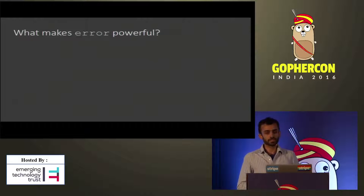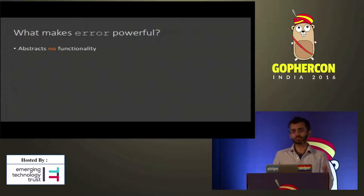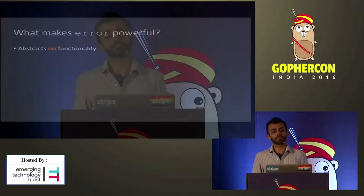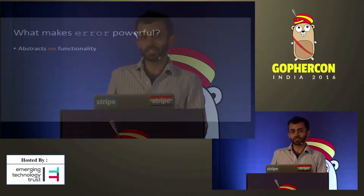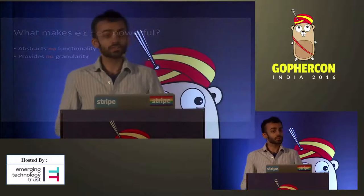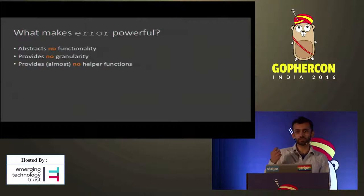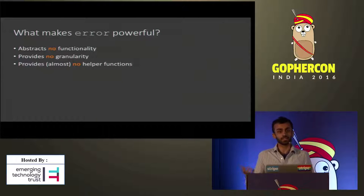Error, on the other hand, is interesting because it's powerful for almost the exact opposite reasons. Unlike the IO interfaces, it abstracts no functionality whatsoever. The only thing the error interface does is tell you: I am an error and here is the string that corresponds to it. In most cases, that string is statically determined — not even dynamically computed from runtime data. There's no granularity, only one method and one interface, no related interfaces, and almost no helper functions. You get errors.New and fmt.Errorf — that's it. Everything else you make yourself. And yet error is both the most ubiquitous and arguably the most powerful interface in the entire language.